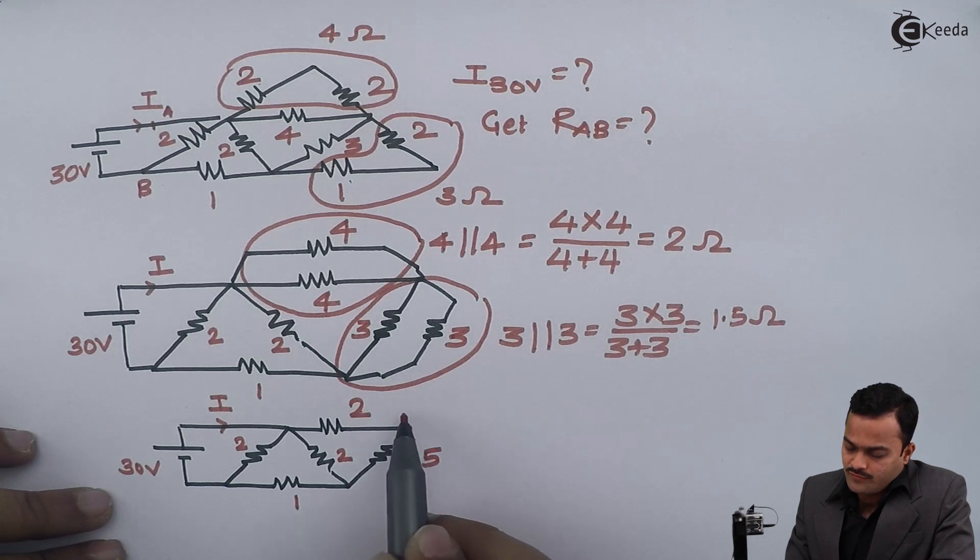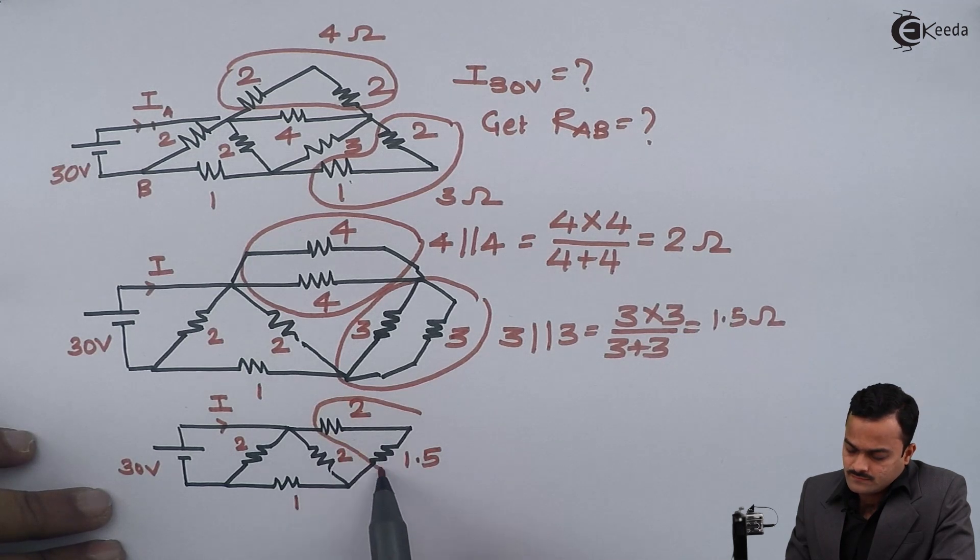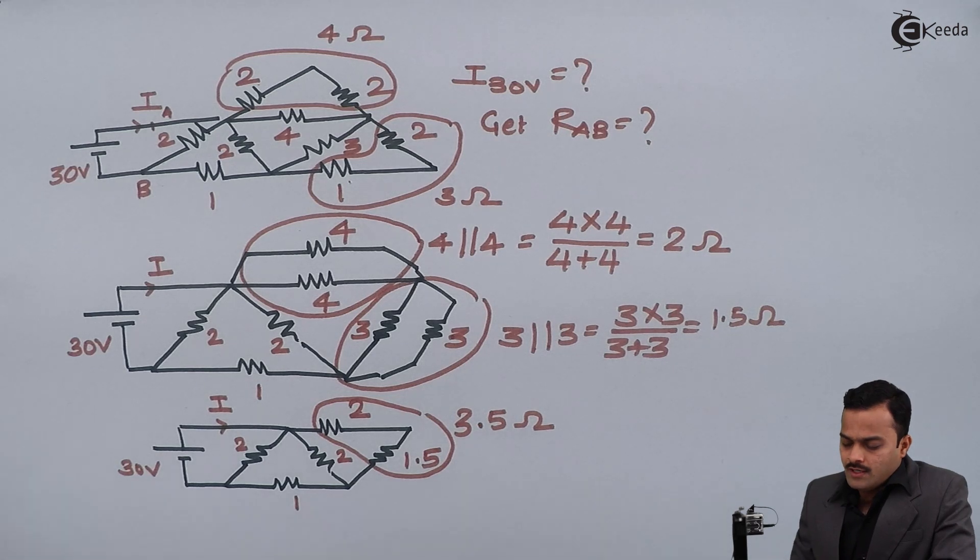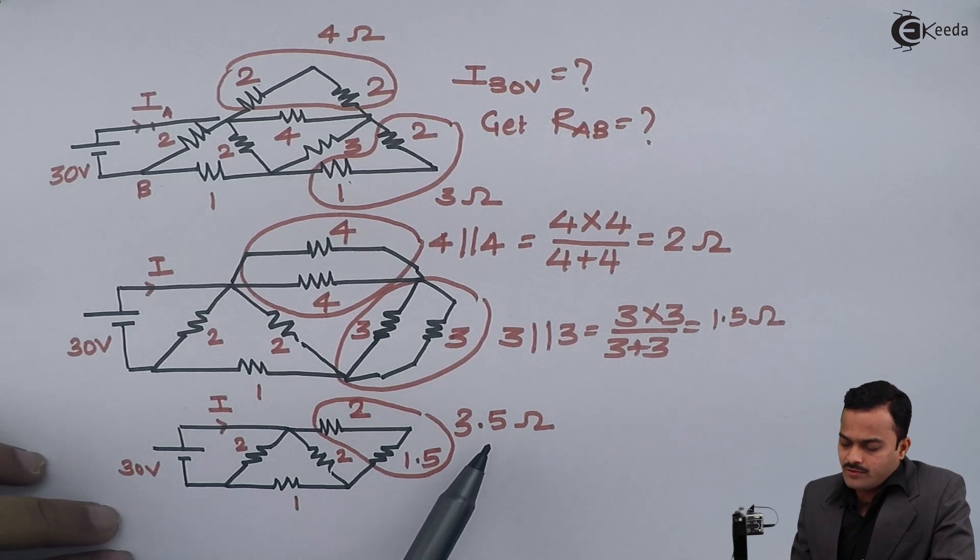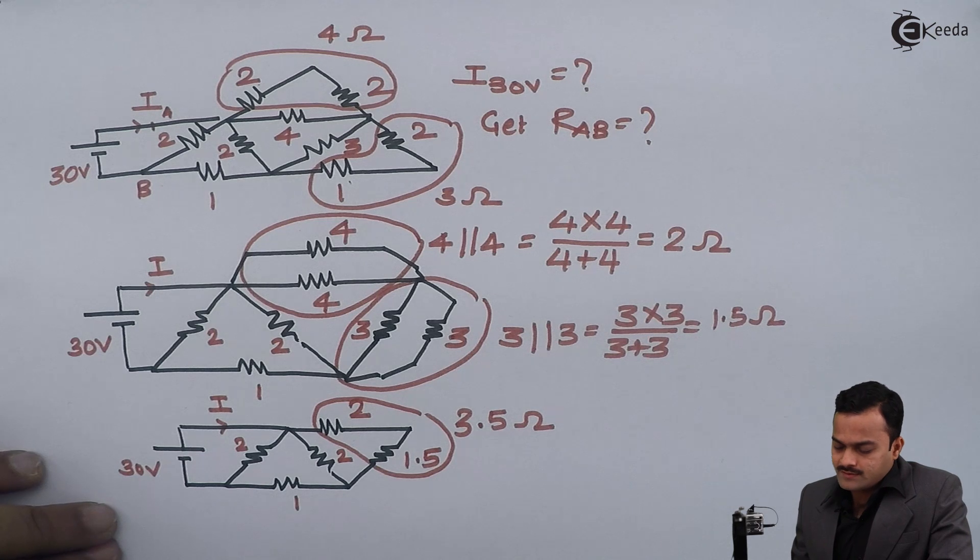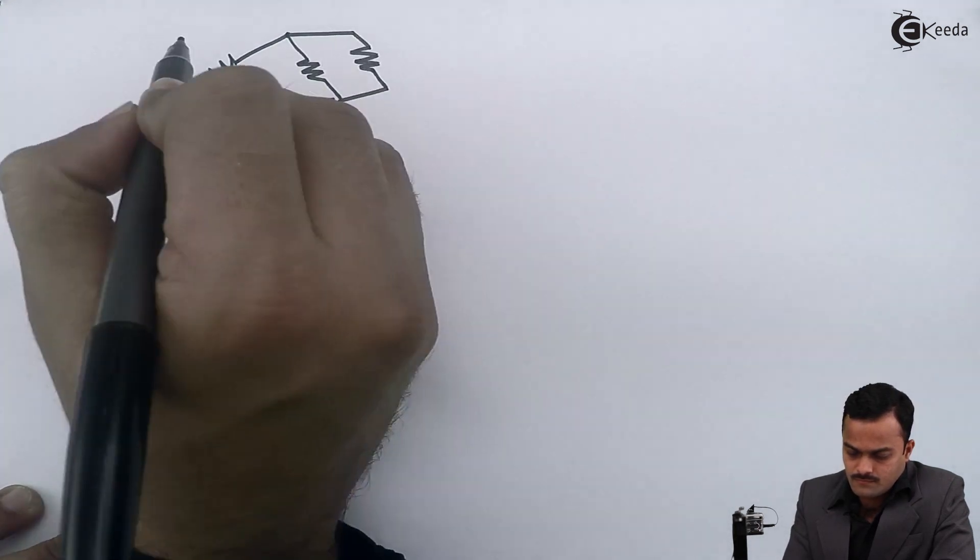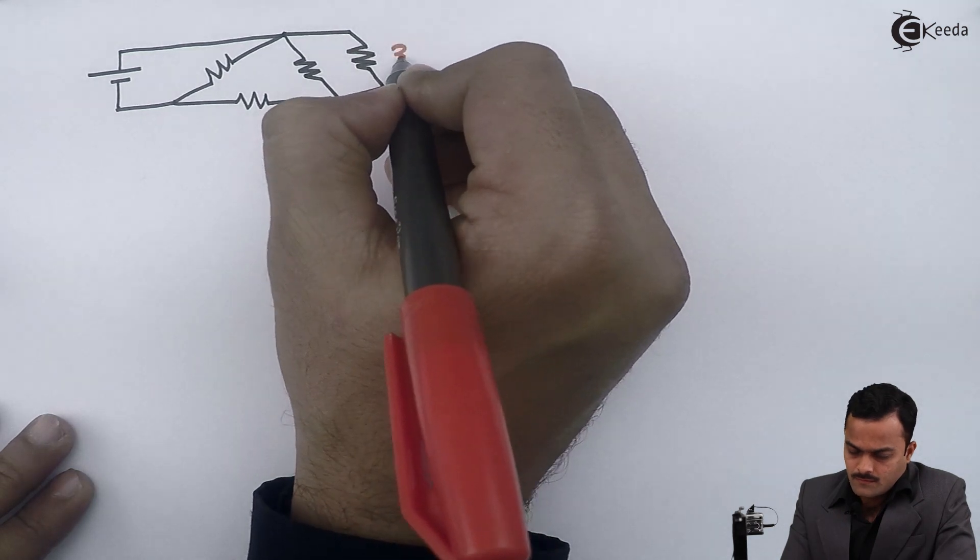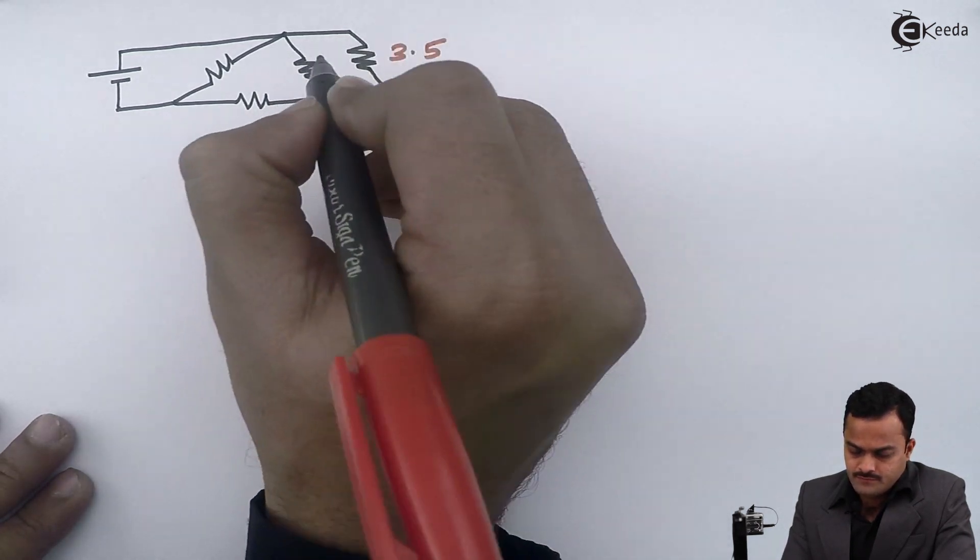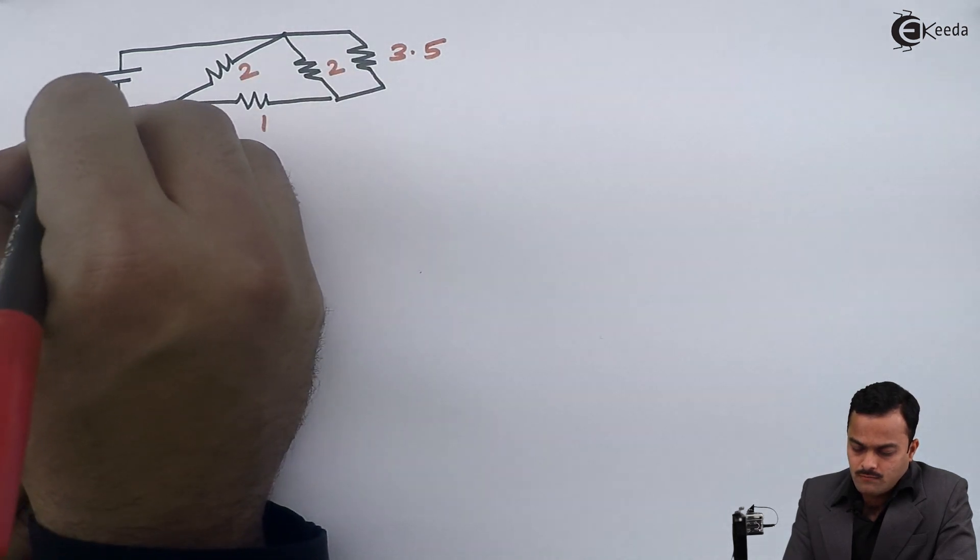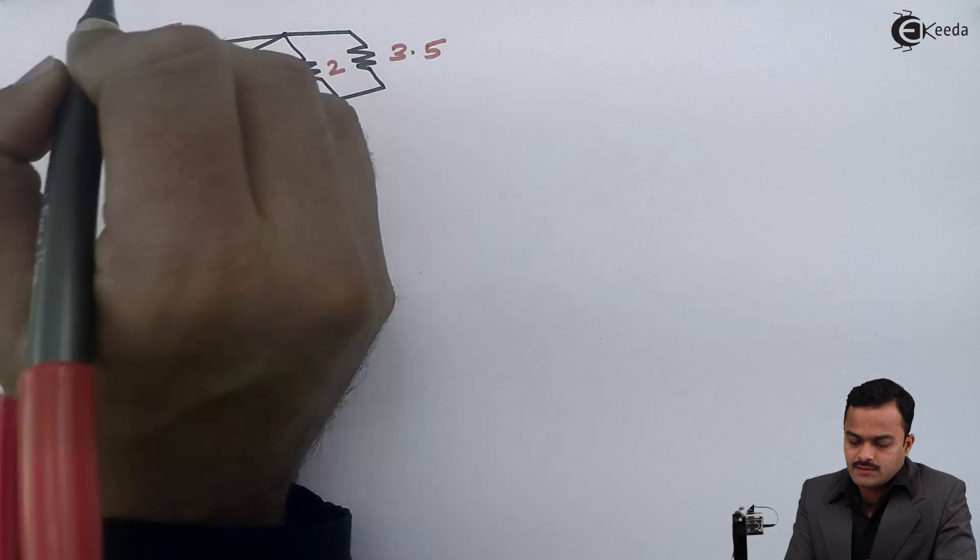Now 2 and 1.5 are in series, so I will get 3.5 ohm. Now considering this 3.5 and the remaining part of the circuit, the circuit will look something like this: 3.5, this is 2, 2, 1, battery of 30 volts, and this is current I.